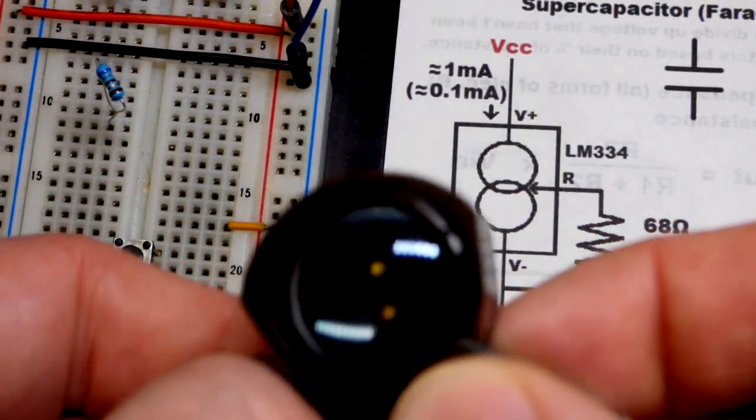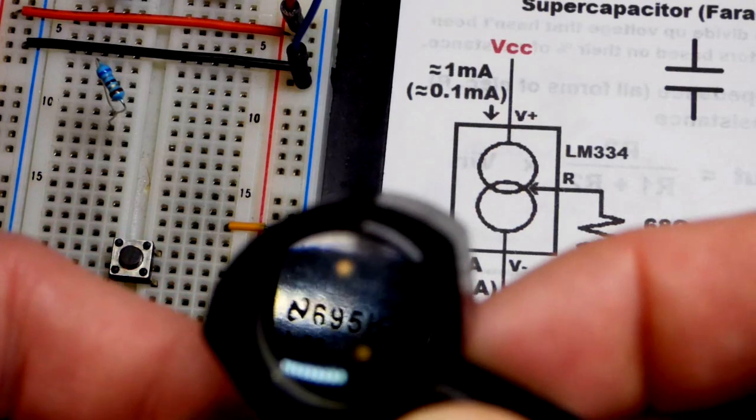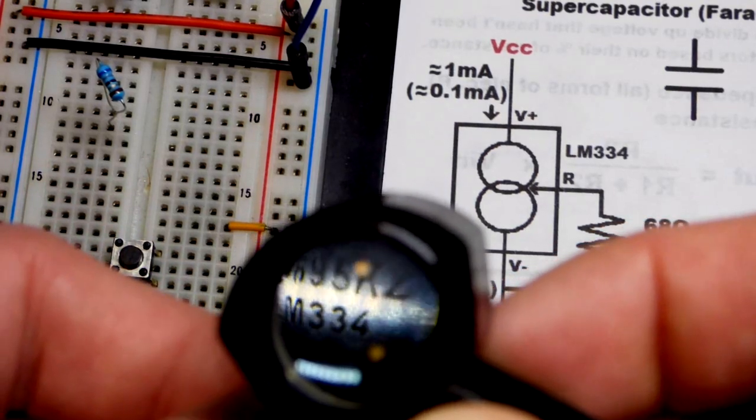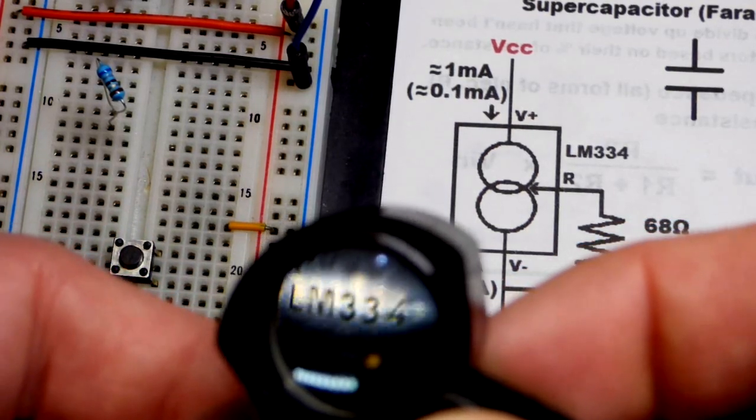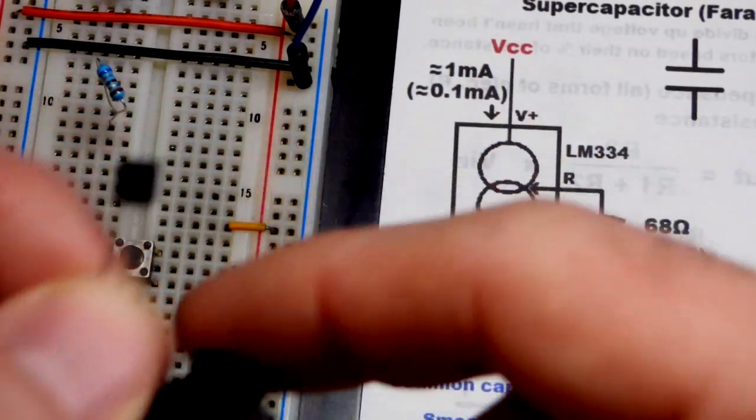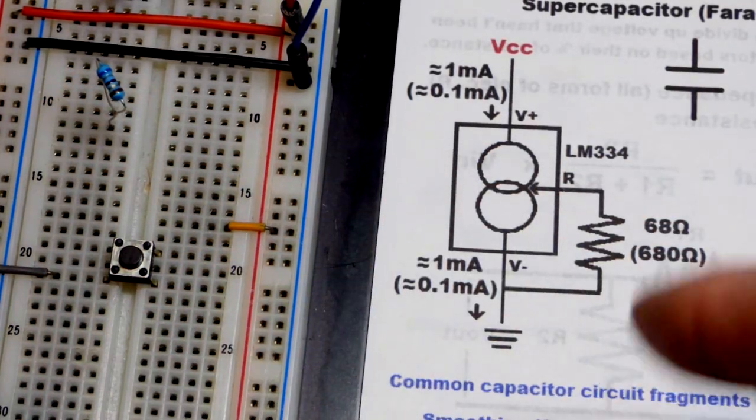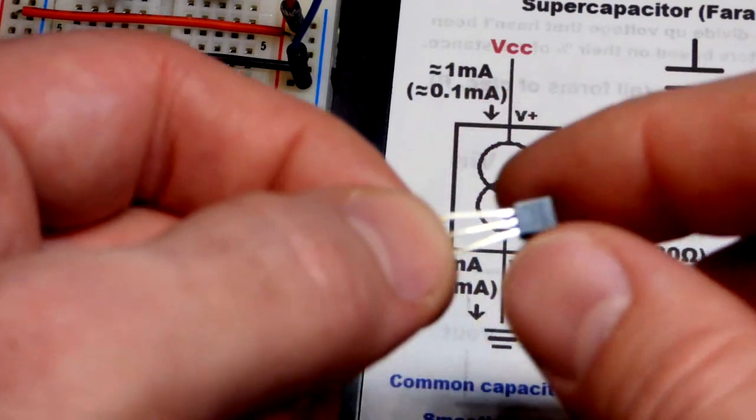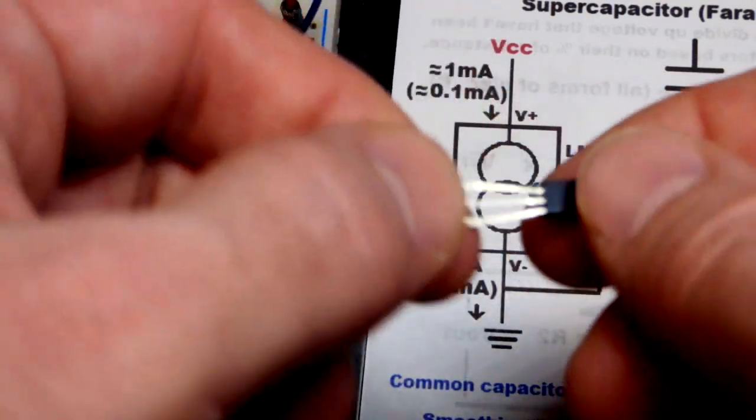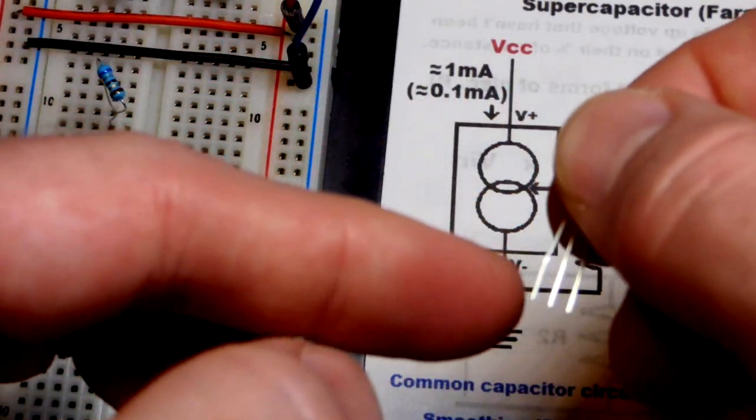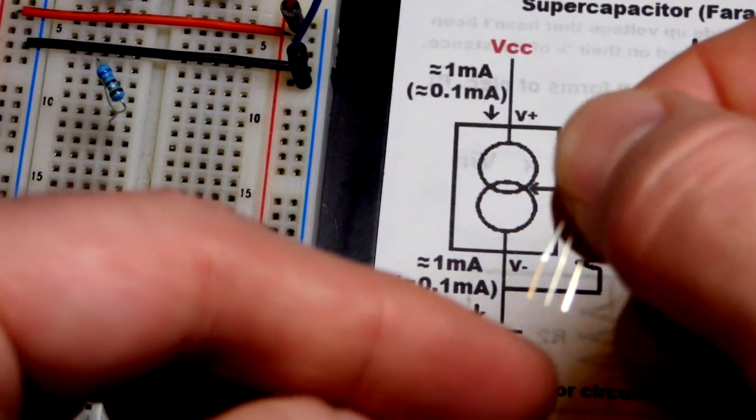And there we go, it's the LM334 right there. And so by using a single resistor you can set a current that it lets go through it. If we turn it this way, so flat side facing us, the left pin is V plus, middle pin is R, and the right pin is V minus right there.